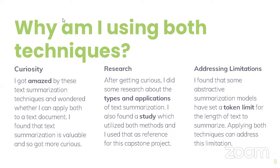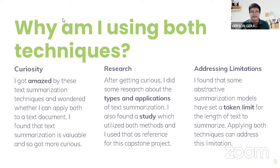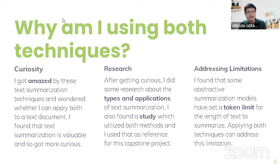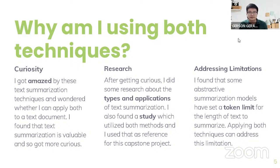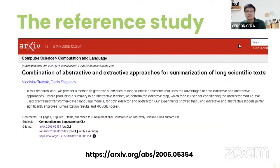After doing more research, I found limitations to using just one method. Some abstractive summarization models have a set token limit — a set amount of length they can take to summarize. This is disadvantageous for long text like scientific documents. Hence, I'll be using extractive first and then abstractive summarization to circumvent this token limit that the model I'm using has.